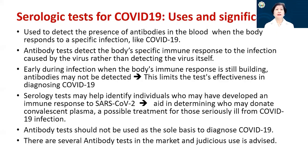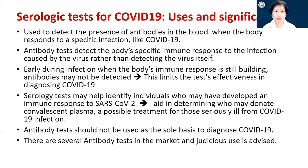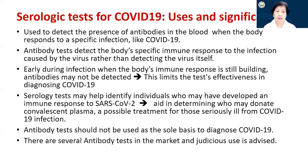The antibody tests became available first — at least two months before the antigen tests were approved. For serologic tests, we now understand they are used to detect the presence of antibodies in the blood when the body responds to a specific infection — in this case COVID-19. It detects antibodies, the specific immune response, rather than the virus itself. It is the host immune response and not the virus.